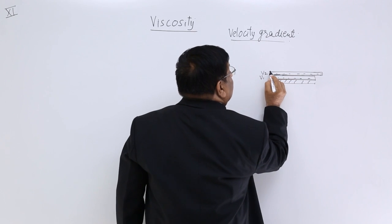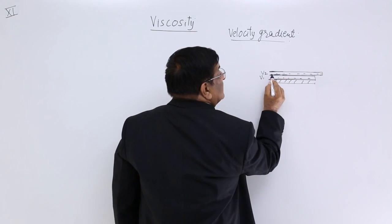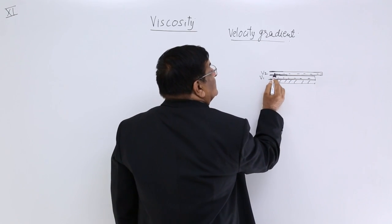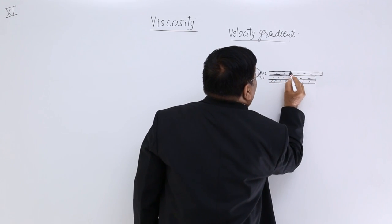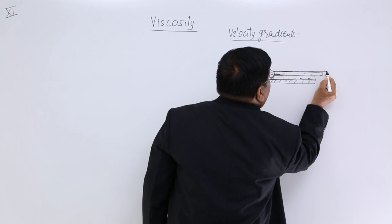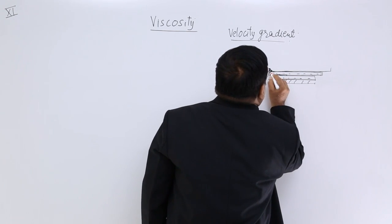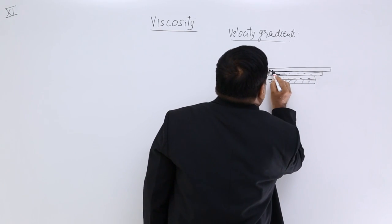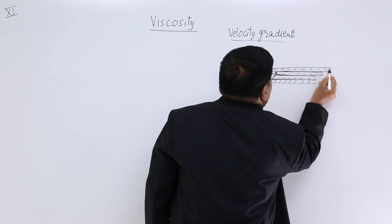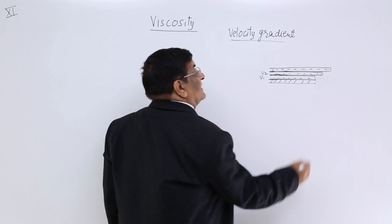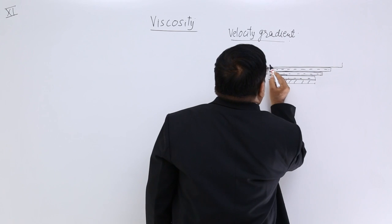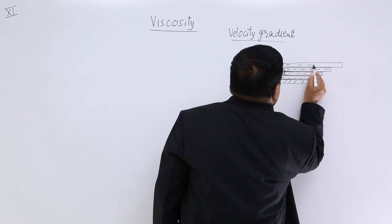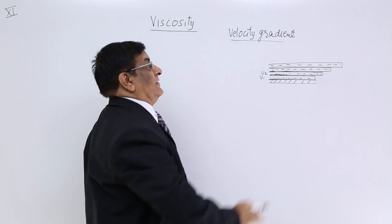The layer above it has got this velocity V2 as the floor velocity. And above that, due to the pressure, it has certain more velocity, like this. In this way, there are different planes which are moving with different velocities.